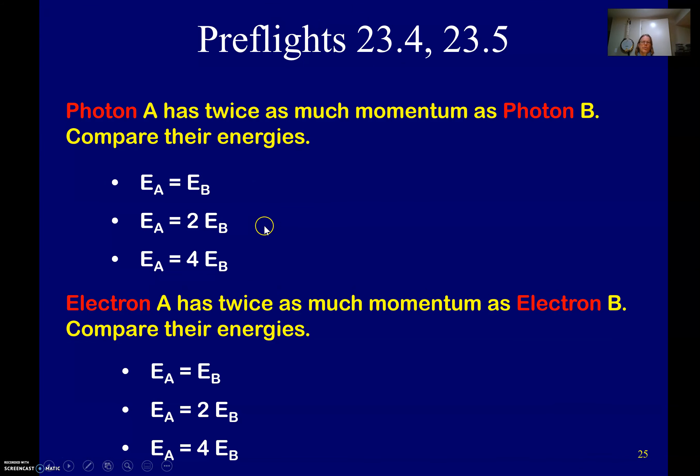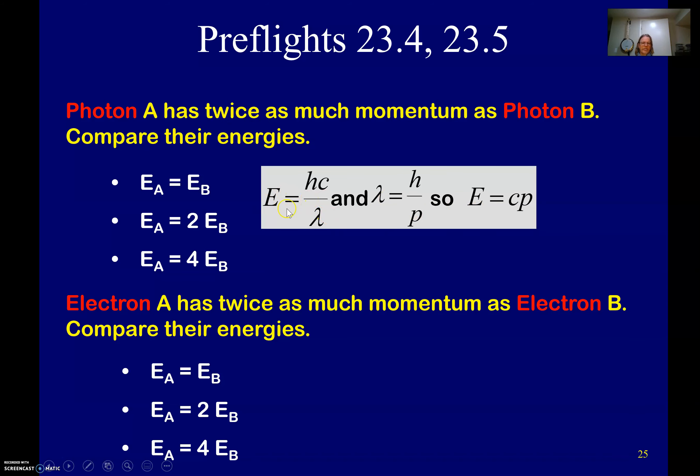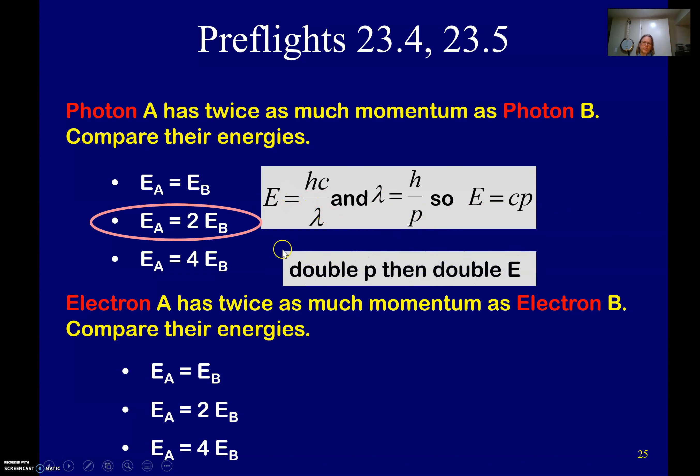All righty. So I don't know if I'd get hung up with this, but if photon A is twice the momentum as photon B, compare their energies. So we'll start twice the momentum. It has more energy. It turns out it's twice the amount of energy if you want to do this. We've got to keep on trucking here.